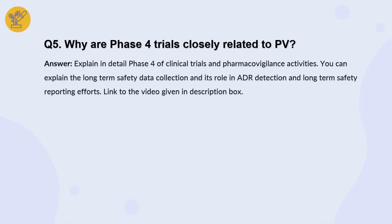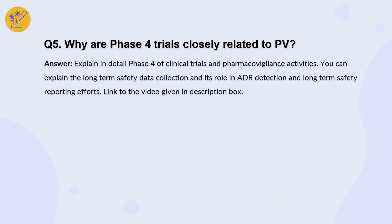Interviewers will ask you about Phase 4 trials and their relationship to pharmacovigilance. You need to clearly explain the various phases of clinical trials and why Phase 4 is called the pharmacovigilance phase — covering long-term safety data collection and the role of pharmacovigilance in adverse drug reaction detection and long-term safety reporting. A detailed video on the various phases of clinical trials is available; check the description link to understand where pharmacovigilance fits into each phase.